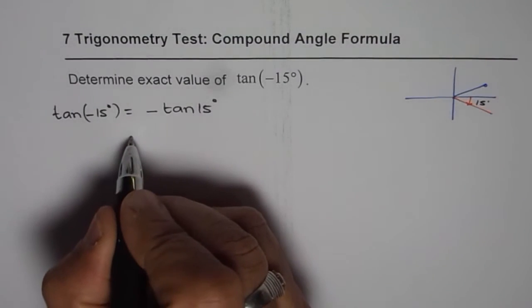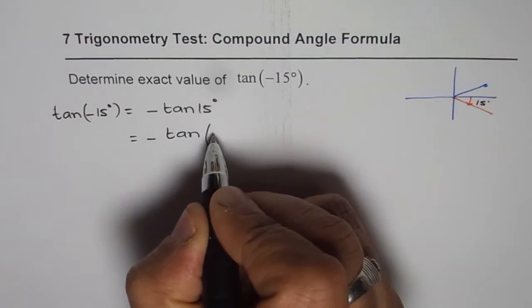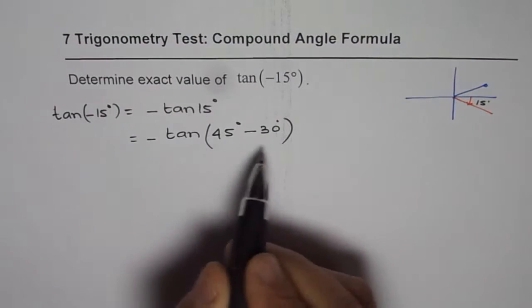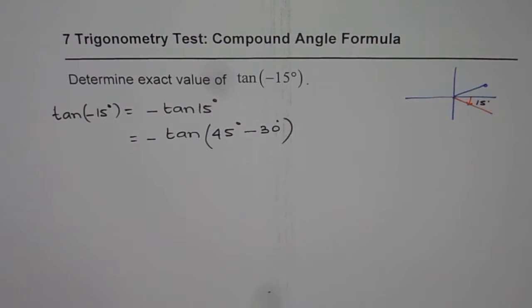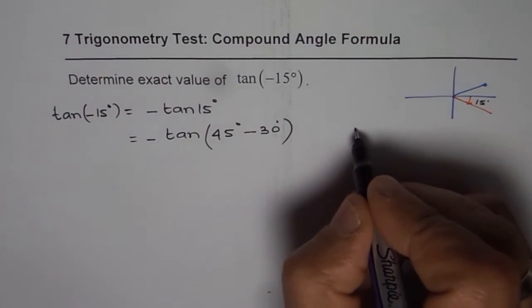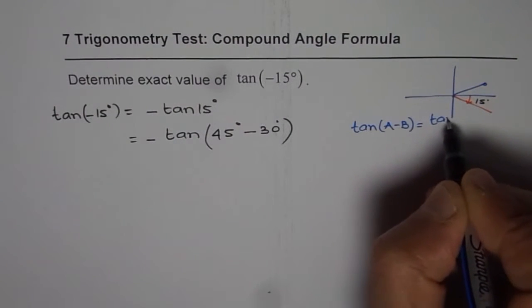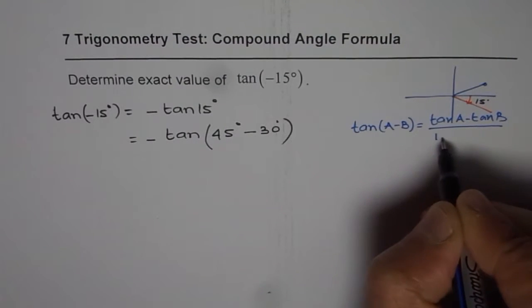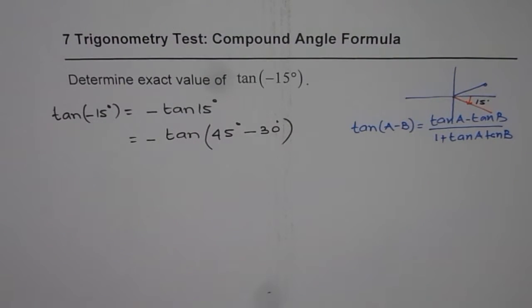Now tan of 15 degrees can be written as a combination of 45 degrees minus 30 degrees. And now we can apply the compound angle formula for tan and find the answer. The compound angle formula for tan is: tan(A − B) = (tan A − tan B) divided by (1 + tan A · tan B). So at this stage, you can apply the formula and continue.